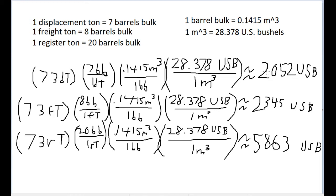And that is about 2,052 U.S. bushels. I did the same process for freight tons and register tons, except for a freight ton, that's eight barrels bulk. But doing that whole chain link conversion gets you 2,345 U.S. bushels.